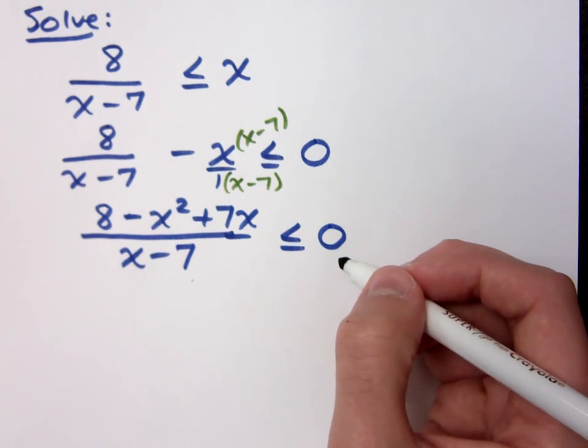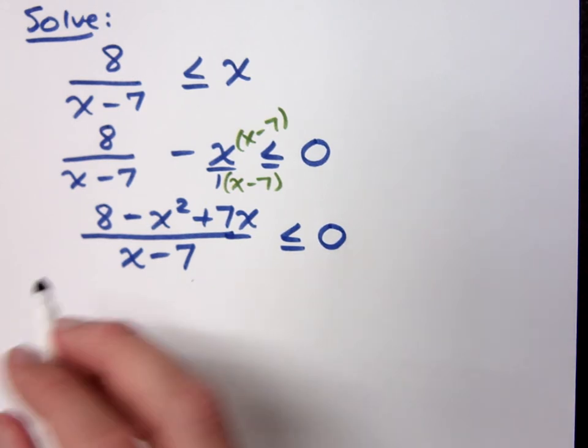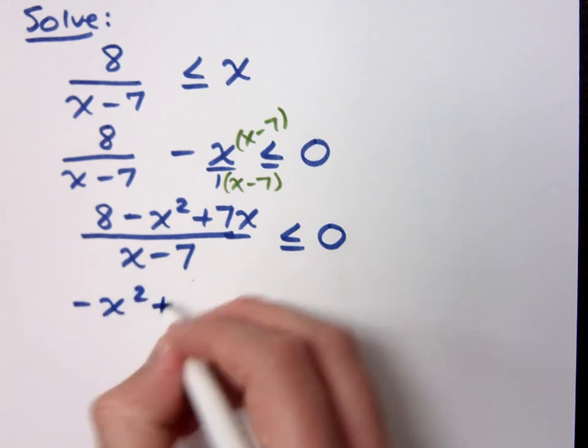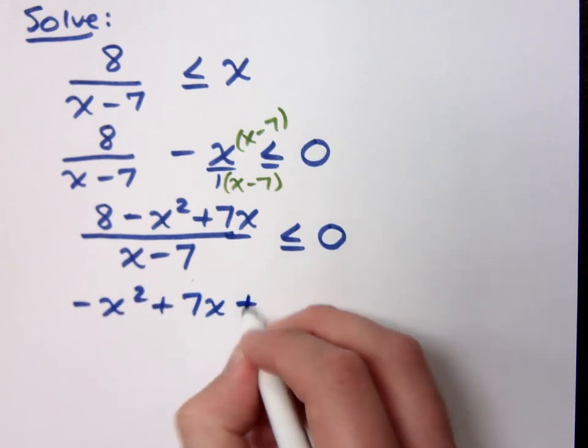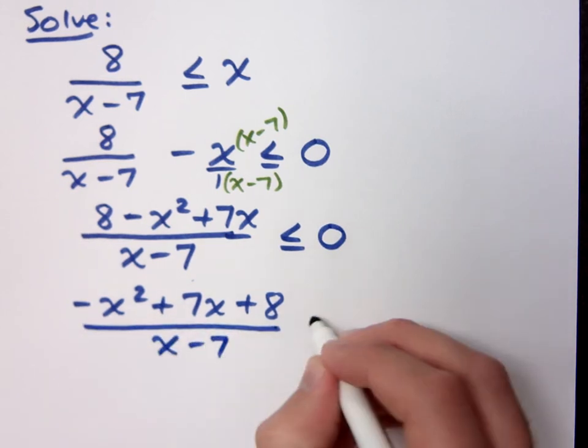Now, this is I've got to do something on that numerator, right? What can I do? I need to factor this out. First, let me rewrite this so that's negative x squared plus 7x plus 8 over x minus 7.